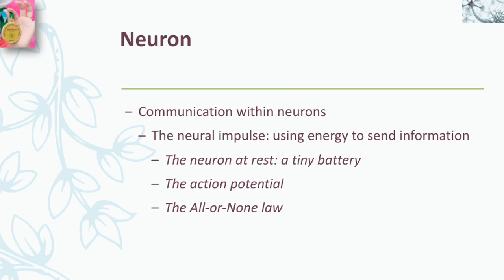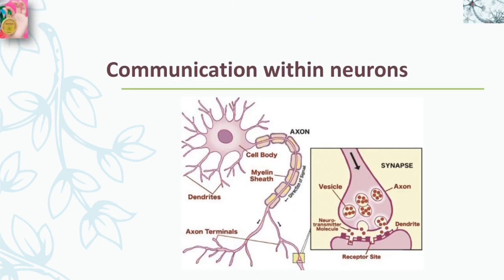In this video we will be discussing communication within neurons: the neural impulse, which is using energy to send information; the neuron at rest, in which we will discuss a tiny battery; then the action potential; and last but not least, the all-or-none law. In this video we'll consider the nature of communication within a neuron, and in the next video we will describe the communication between neurons.